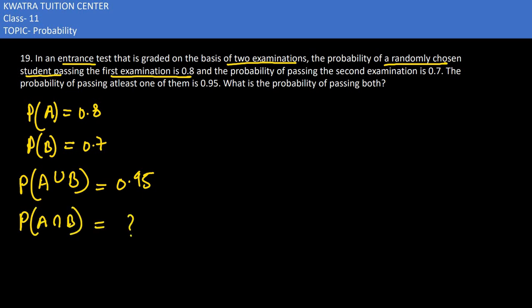We know that A union B is equal to P(A) plus P(B) minus P(A intersection B).